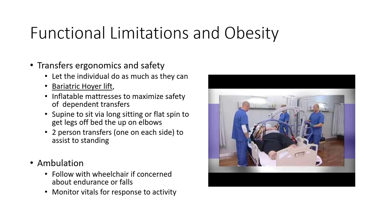Some considerations for PT specifically: transfers are a big one — making sure we let individuals do as much as they can, the use of a Hoyer lift, different mattresses, and different types of transfers. For ambulation, make sure you have a wheelchair behind the patient. Monitor vitals — obese individuals may have a hypertensive response to exercise, and at rest their heart rates are going to be a little bit higher. Be aware of abnormalities in cardiovascular response. If they're walking in a hallway for gait training and need to stop and rest, it's good to have a chair behind them.